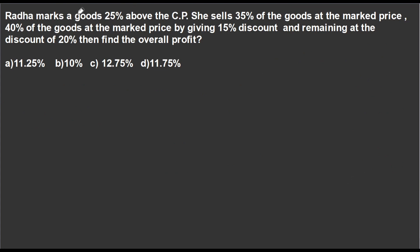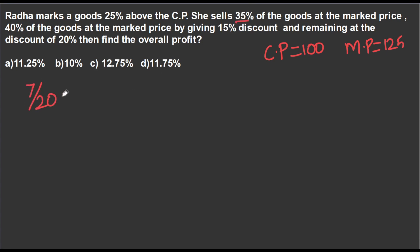Rather, a shopkeeper marks goods 25% above the selling price. Cost price is 100 and market price is 125. He sells 35% of goods — the fractional value is 7/20. The remaining 40% of goods come next.